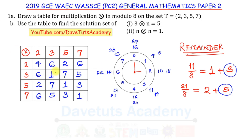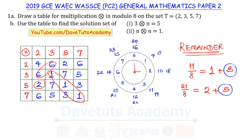Looking at the completed table, we can observe a clear symmetry: entries like 6 and 6, 2 and 2, 1 and 1, 7 and 7, 5 and 5, 3 and 3 appear symmetrically across the diagonal. The more you work with modular arithmetic tables, the more readily you will notice these patterns.